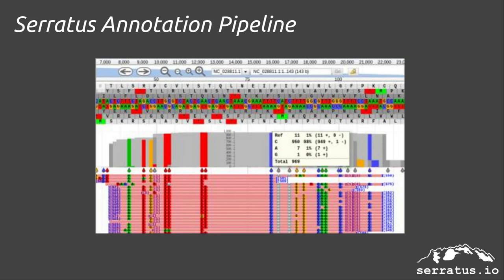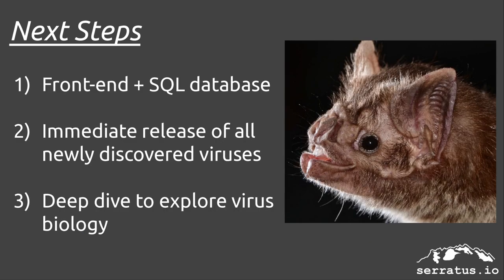I'm hoping that by the time you're watching this talk, we have a functional website and API so that you can access viral reports for every sequencing accession, and a dump of all the data into an SQL relational database for easy querying. The primary objective of Serratus is to identify novel coronaviruses and other viruses and release the sequences publicly into GenBank right away, and I'm hoping that we have a few hundred of these done by now. Besides just identifying novel sequences, I'm hoping to do a deep biological dive into some of these viral families to better understand how viruses evolve and change over time — namely, what can we learn from the evolution of other coronaviruses and how they have spilled over into humans and caused this pandemic.